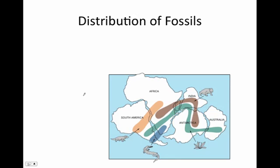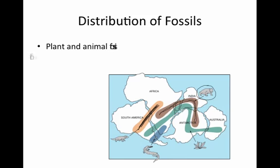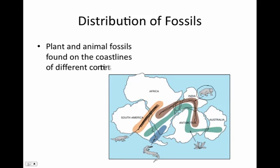Next, if we look at the distribution of fossils around the world, we notice that fossils tend to show up on different continents that are now separated by large amounts of water, but maybe weren't before. We were finding creature fossils on different continents around the world. Wegener said the only way that's possible is if at one point the continents were connected — there were similar fossils found in Africa and South America. Plant and animal fossils were found along all the coastlines of the different continents.